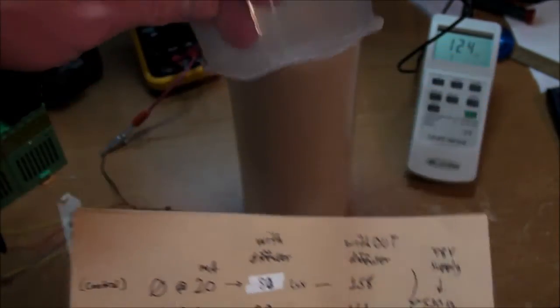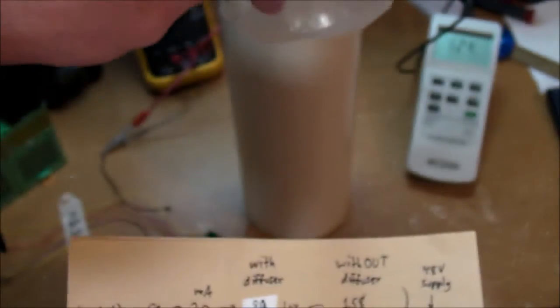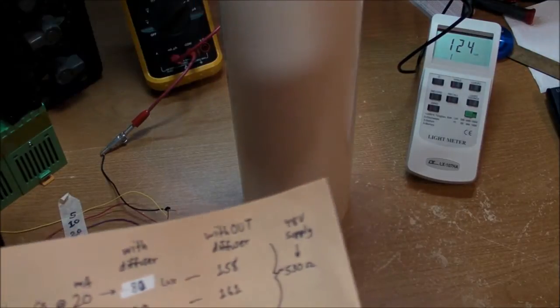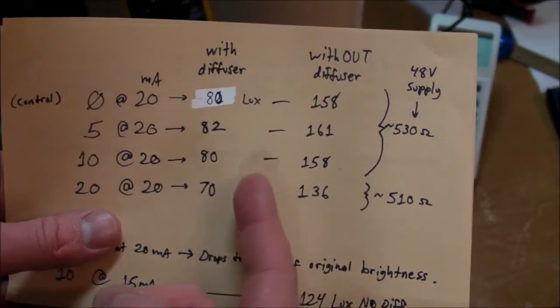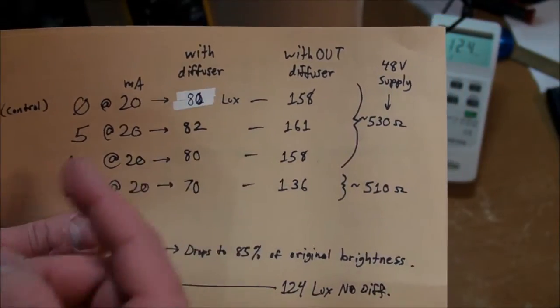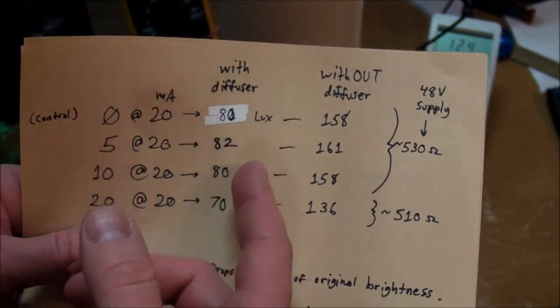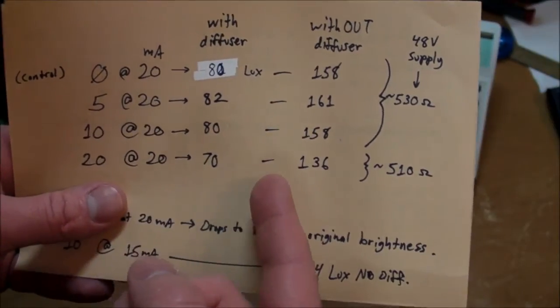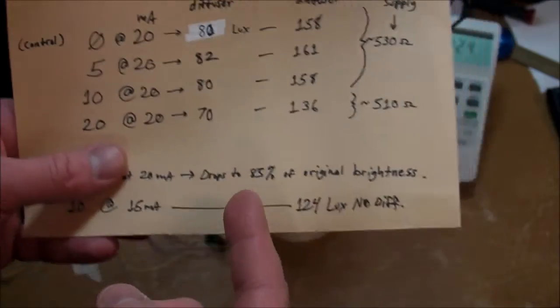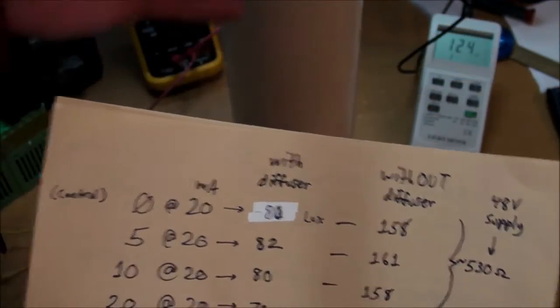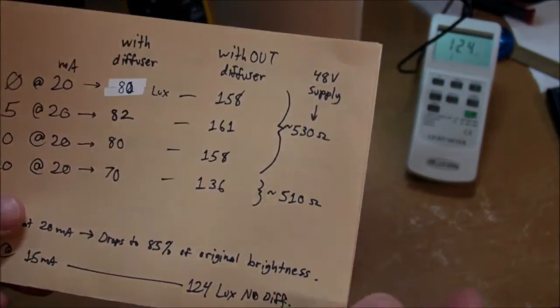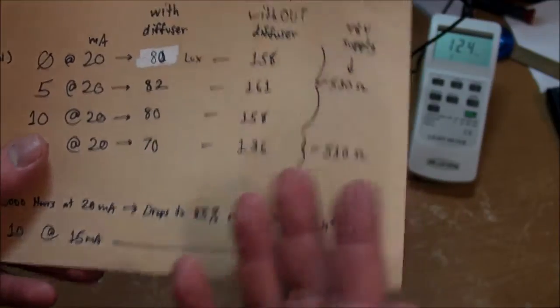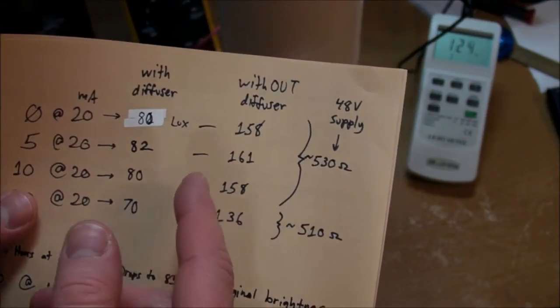And then I took the diffuser out. The diffuser was roughly right in the middle of the pipe. Took it out and everything was proportional by a factor of 1.95, roughly on average. That is, the diffuser blocked out 51% of the light. And apparently it wasn't really necessary because the pipe, the whole length of the pipe itself, did enough diffusing anyway. That's really good. I didn't even need any extra diffusion there.